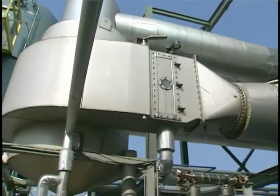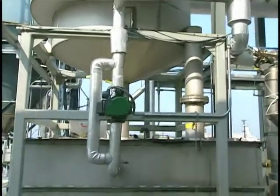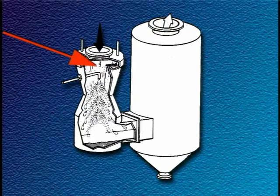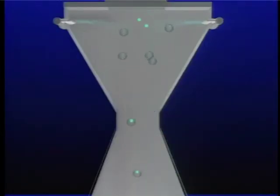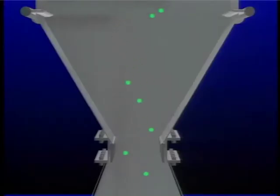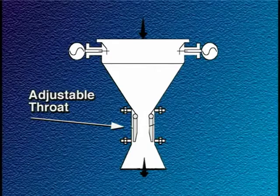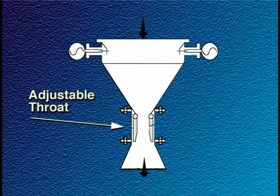One variation of the standard venturi scrubber is the wetted approach design. In this design, the scrubbing liquid is introduced at the beginning of the converging section using overflow weirs and a central spray nozzle. This is done to wet the converging section and protect it from particle erosion. Another variation is the variable throat venturi. Since the scrubbing energy is a function of the gas velocity in the throat, venturis that can change their throat dimensions are used when the gas flow rate from the process varies. The position of the adjustable throat mechanism is usually set to maintain a fixed pressure drop across the collector.